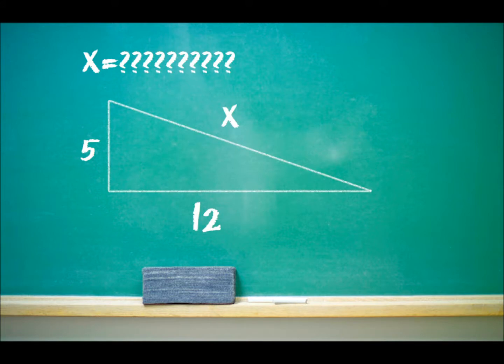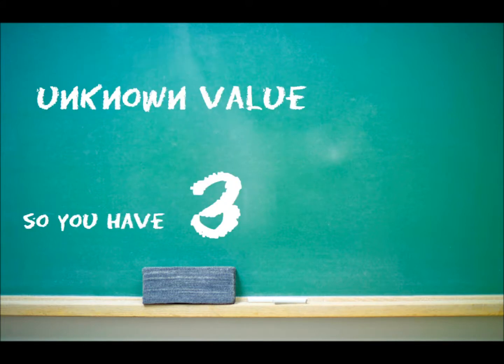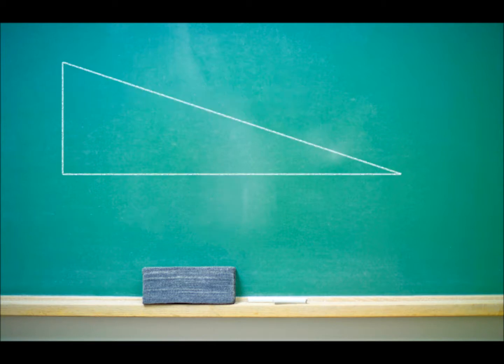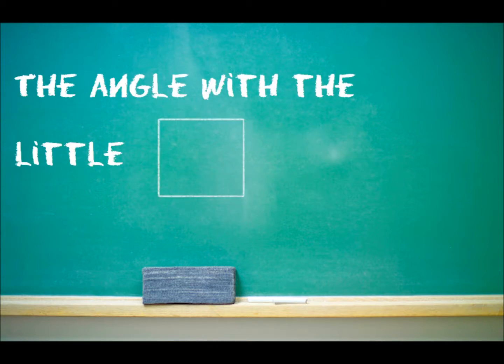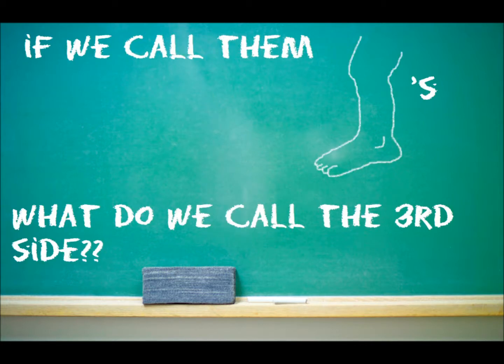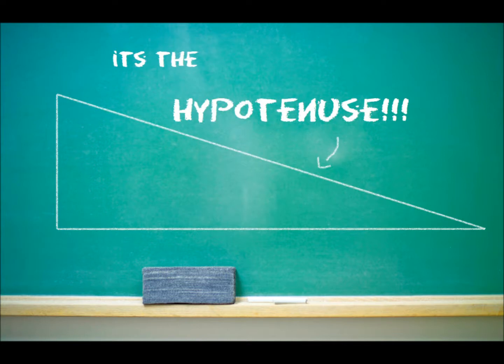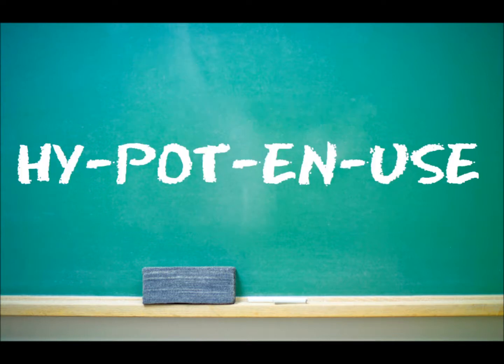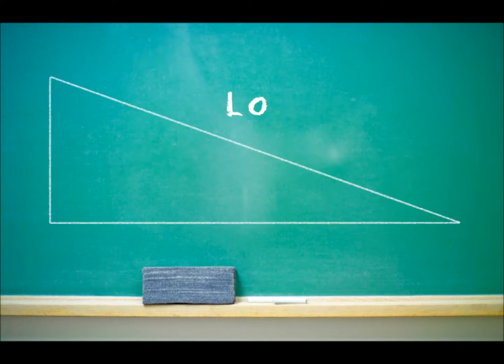In the right triangle, given two sides, use the Pythagorean theorem. You can find unknown values, so you have three. Label all the sides with an A, B, and C. Looking for the C, I am that side right across from the 90 degrees, the angle with the little square shaped like an L for the legs that are there. If we call them legs, what we call a third side? It's the hypotenuse, say it if you heard it right. Hypotenuse, longer than the other two.